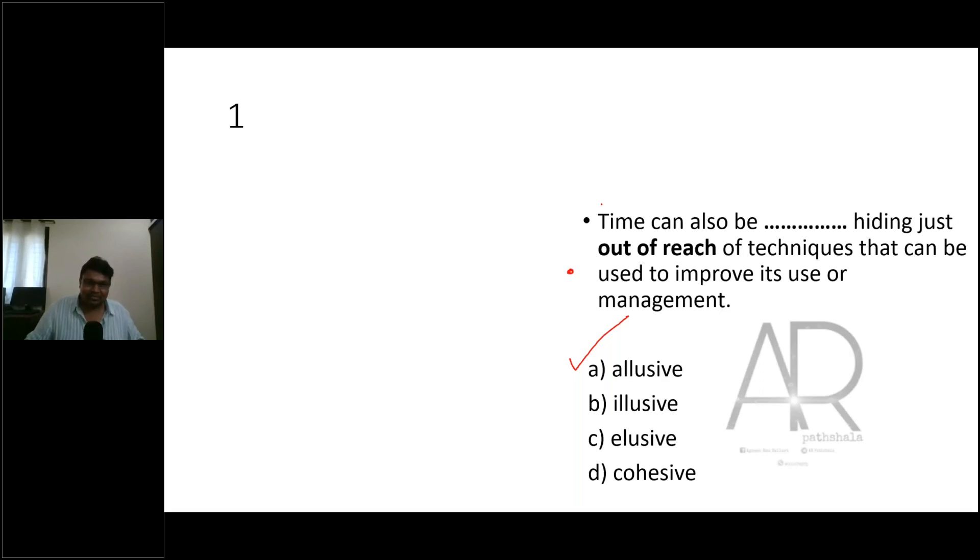Good morning. First one: elusive. Why? Option out of reach, and that's the key point. Out of reach and the escaping nature - escaping nature. But definitely answer C, and you are bloody correct. That's the correct answer. Very nice, superb answer.